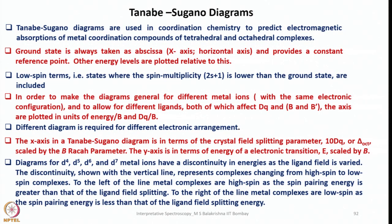Let us come back to Tanabe-Sugano diagrams. Tanabe-Sugano diagrams are used in coordination chemistry to predict electromagnetic absorption of metal coordination compounds of both tetrahedral and octahedral complexes. Ground state is always taken as abscissa, x-axis or horizontal axis, and provides a constant reference point. Other energy levels are plotted relative to this ground state. The low spin terms, where spin multiplicity 2S+1 is lower than ground states, are also included in Tanabe-Sugano diagrams, whereas not considered in Orgel diagrams.